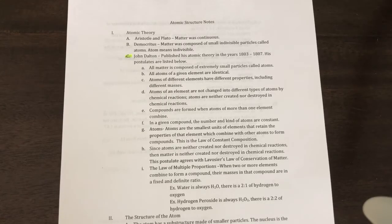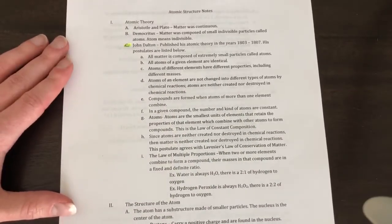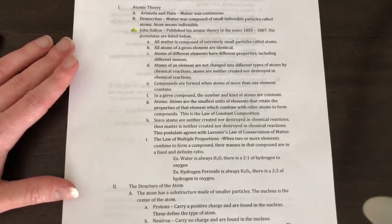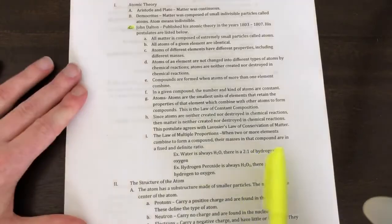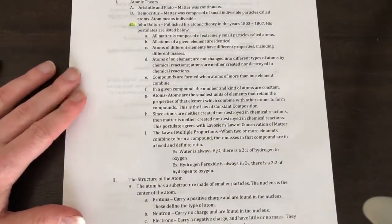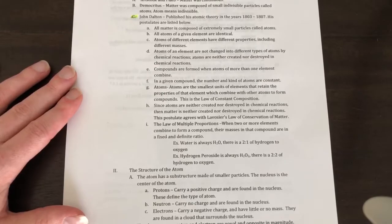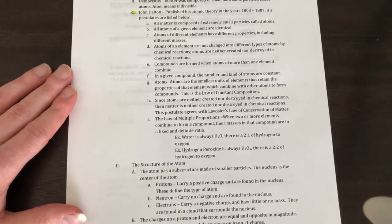Since atoms are neither created nor destroyed in chemical reactions, then matter is neither created nor destroyed in chemical reactions. The law of conservation of mass and energy applies to this. The law of multiple proportions says that when two or more elements combine to form a compound, their masses in that compound are in a fixed indefinite ratio. Water is always two hydrogens to one oxygen. There's always a ratio of two to one. If we're talking about hydrogen peroxide H2O2, there's always a ratio of two to two. So that's how we get different types of compounds. If the ratios are different, then they're going to be a different compound.